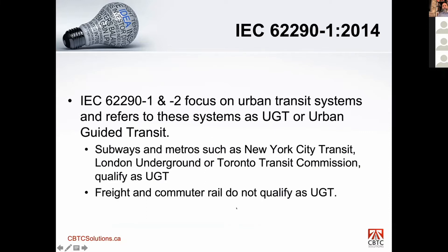So before I begin — what is the IEC standard? It's focused on urban transit systems, and it refers to these as UGT, or Urban Guided Transit. This standard is focused on subways and metros like New York City Transit, London Underground, or Toronto Transit Commission — they qualify as UGT. Freight and commuter rail do not, based on what they say in there. So it's more focused on subways and metro systems and not freight and commuter systems.